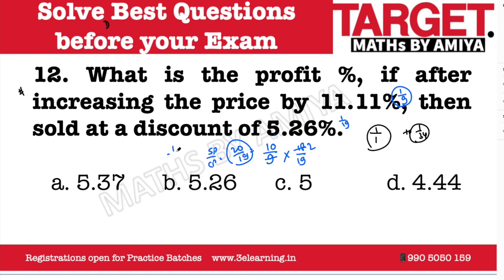So we have a profit of 1 out of 19. We know that 1/19 is 5.26%, so the answer to this question is 5.26%.